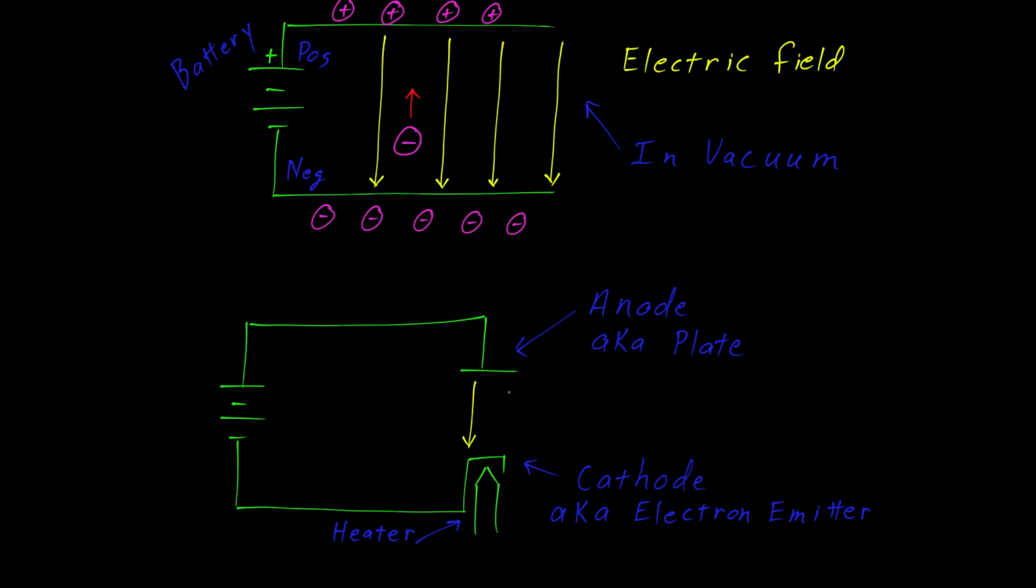When we connected the vacuum tube up to a battery, an electric field was established between the plate and the cathode. Here the electric field is again pointing down. Any electron that finds its way between the cathode and anode will be accelerated up to the anode.